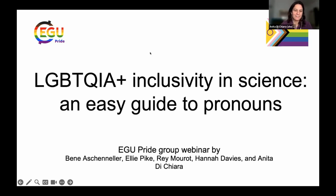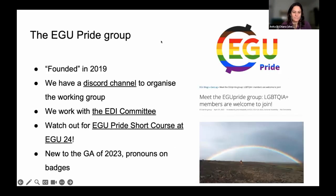Thank you everyone for joining our webinar on LGBTQIA+ inclusivity in science and an easy guide to pronouns, organized by the EGU Pride group. The EGU Pride group was founded in 2019. We now have a Discord channel where we meet and organize activities. We also coordinate with the EDI committee of EGU for the upcoming General Assembly 24. Watch out for the Pride group short course and other activities in the program. This year we have the very important news that we can add our pronouns on badges, and this is what inspired this webinar.